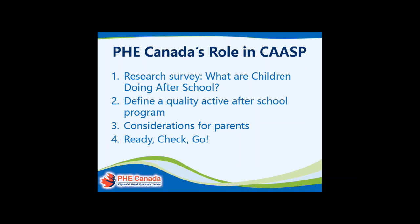Within the CASP partnership, there were six organizations, and they worked together to focus on four key pillars to increase physical activity and healthy eating and lifestyle. Those four pillars were: supporting mental health through active after-school programs, engaging Aboriginal children and youth in active after-school programs, reducing community barriers to active after-school programs, and engaging home and families to enhance access to after-school programs.